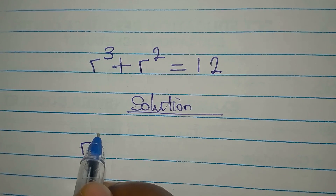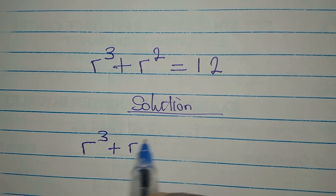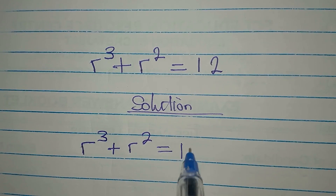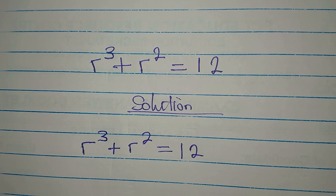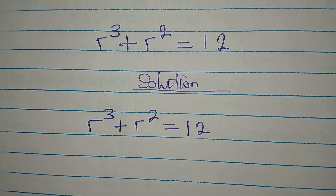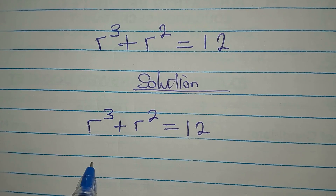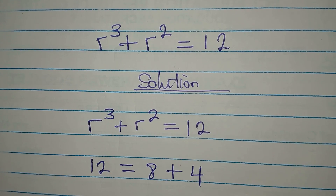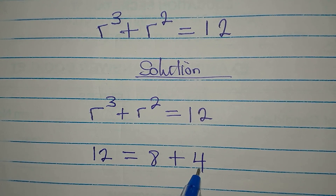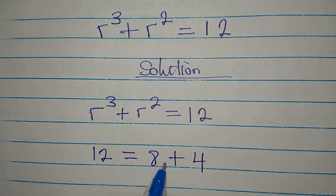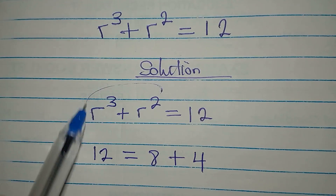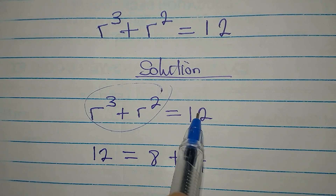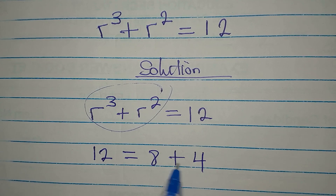This is r to the power of 3 plus r to the power of 2 equals 12. This is simple, and here is what I want us to do. Let's pick this 12 and say that 12 is equal to 8 plus 4. If you pick 12 to be 6 plus 6 it will not work, because 6 plus 6 cannot be in this form. So in place of 12 we're going to write 8 plus 4.